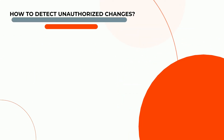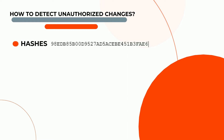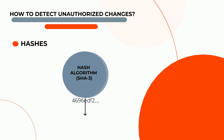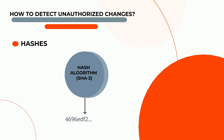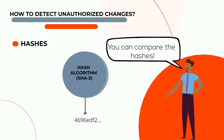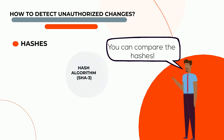To detect unauthorized changes in data, we can use hashes. A hash algorithm takes a message of any size and creates a fixed-sized value, called a hash. If any character in the original message is changed, it will result in a different hash being generated. By creating a hash of a message when you first receive it, you can later test to see if that message has been altered in any way.